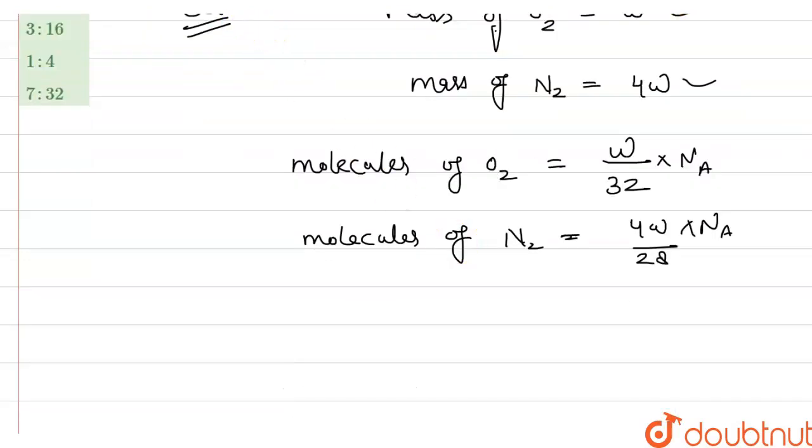Okay, so now take the ratio. So N of O2 upon N of N2, this is equal to NA to NA cancel out and that is w upon 32 into 28 upon 4w.